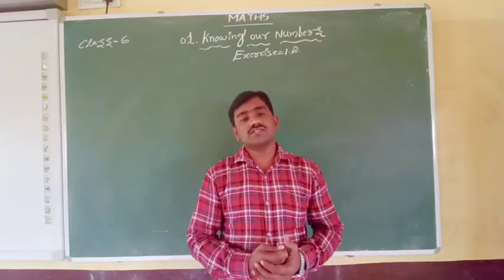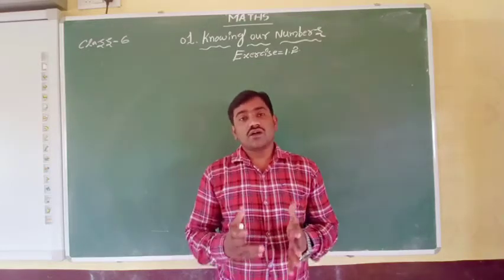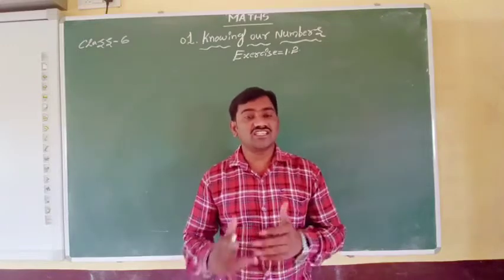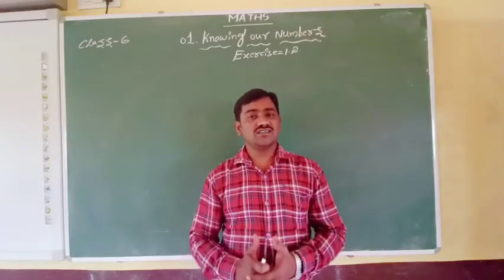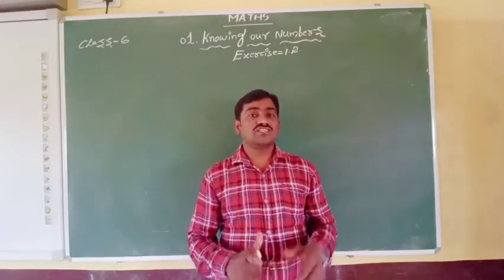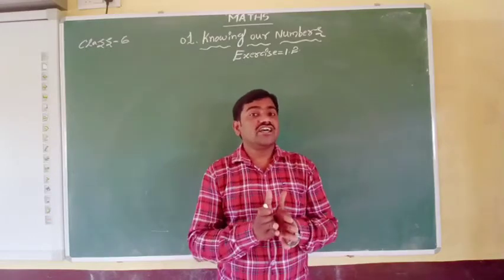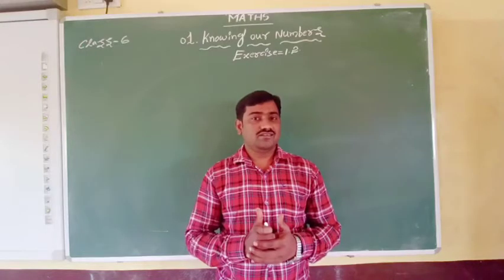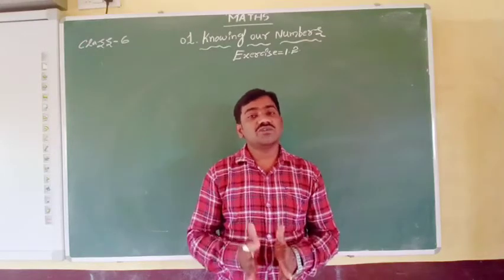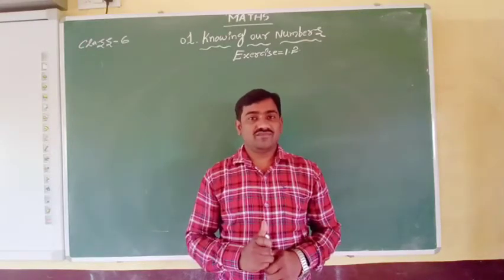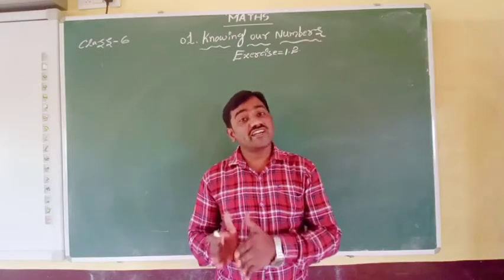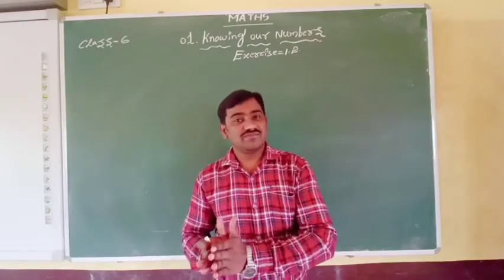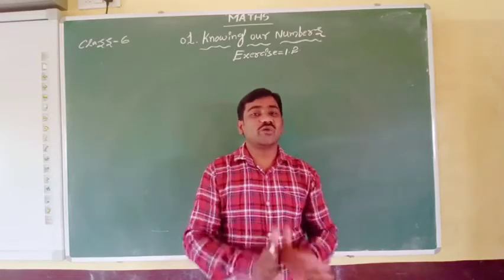Rounding up numbers means rounding to the nearest 10s, nearest to 100s, nearest to 1000s, this kind of thing. Suppose there is an 8 — 8 is near to 10. 16 is near to 20. 27 is near to 30, but not near to 20.